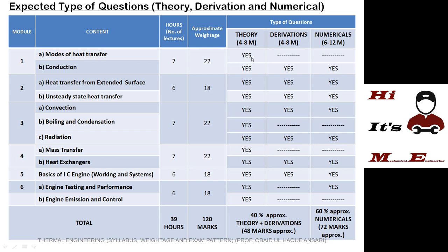If you have a theory or derivation question it can be from 4 to 8 marks, and if you have a numerical it can be 6 to 12 marks. There is a lot of scope for derivation-based questions especially from the heat transfer part, so you cannot ignore either numericals or derivations in this subject.